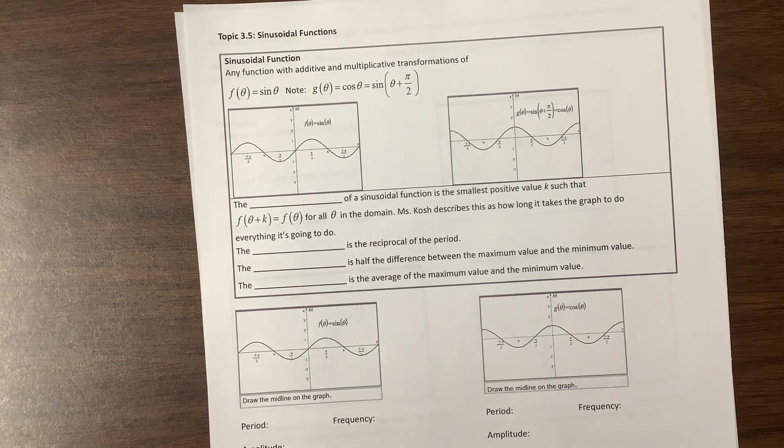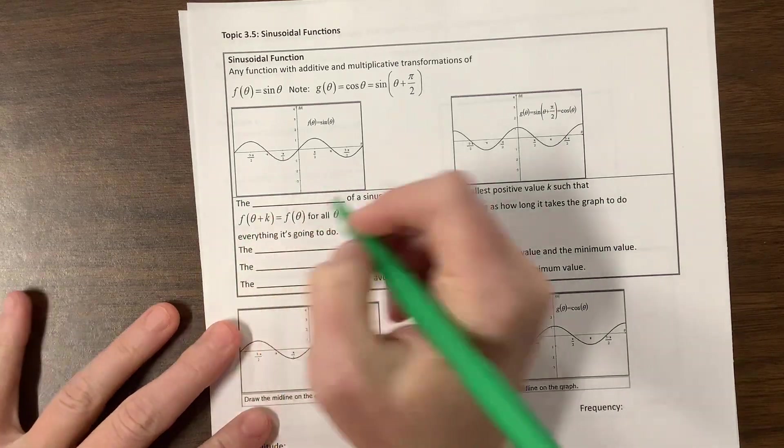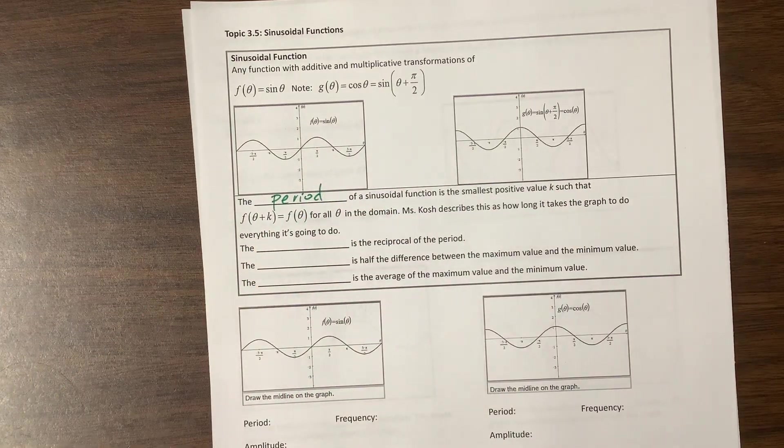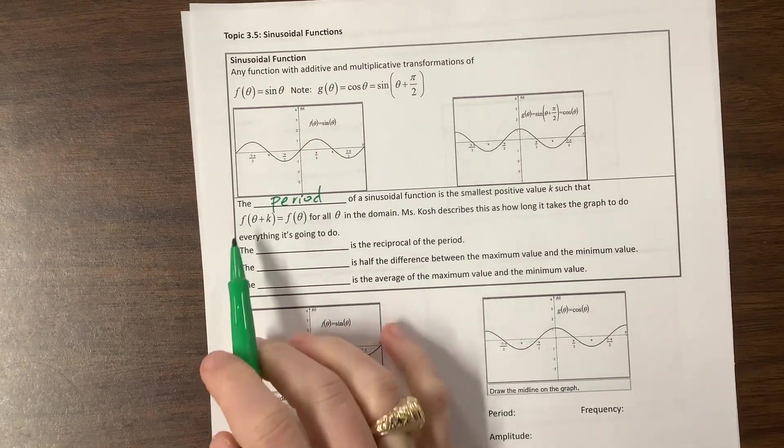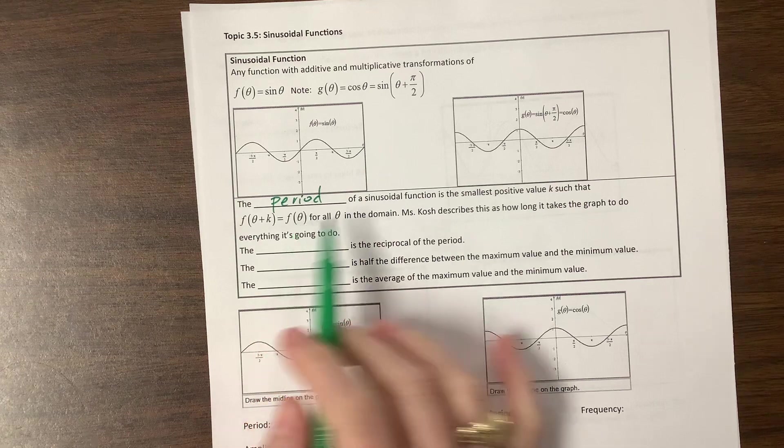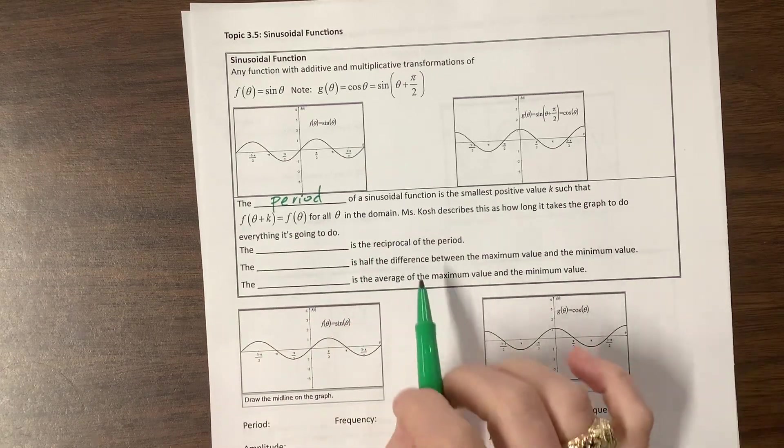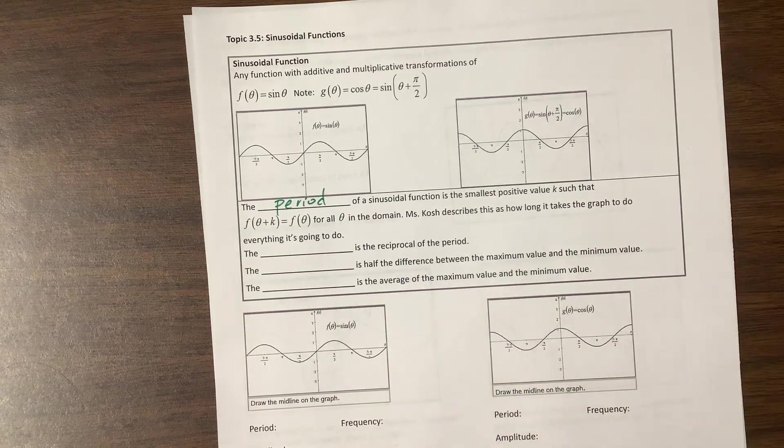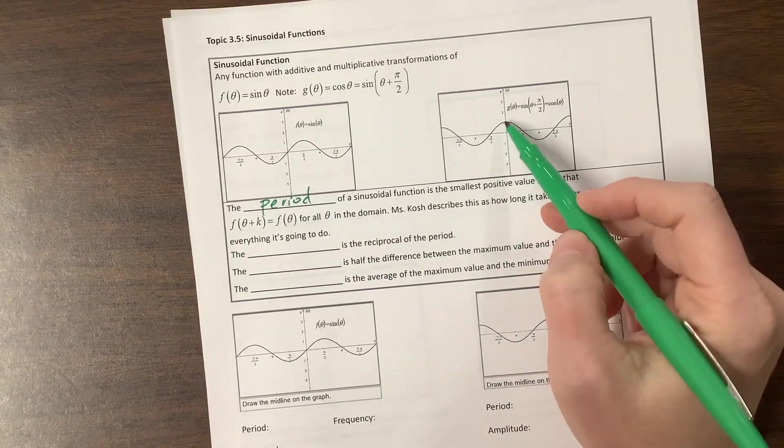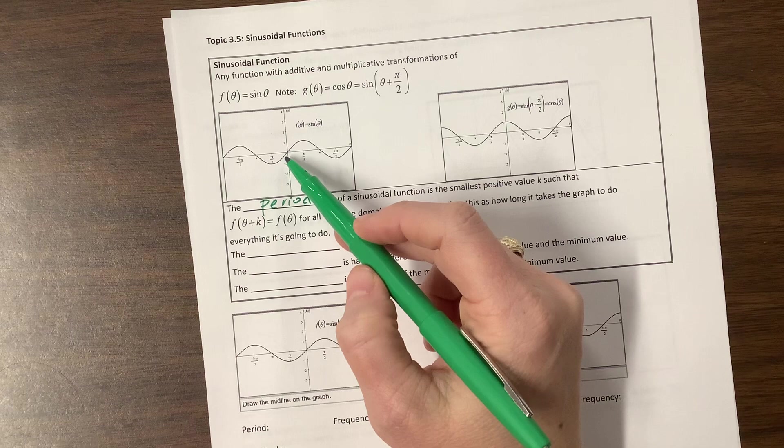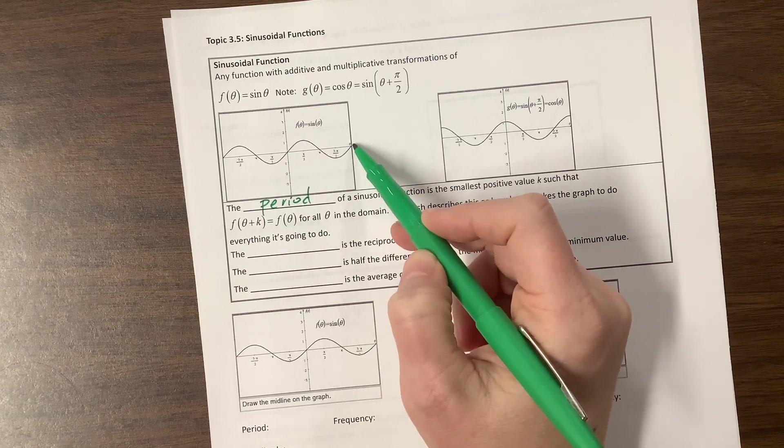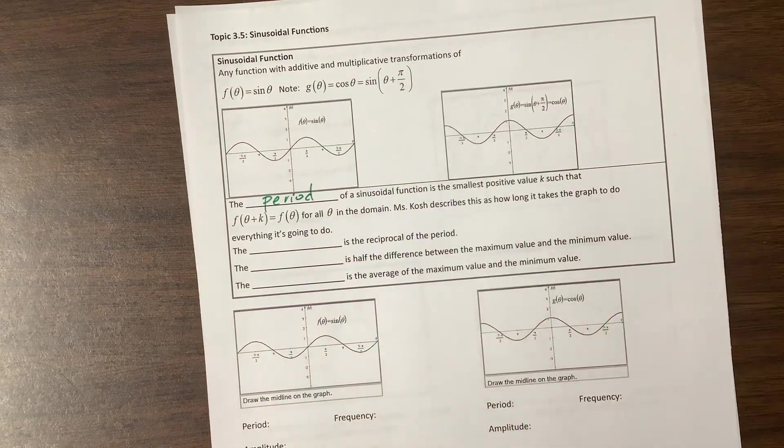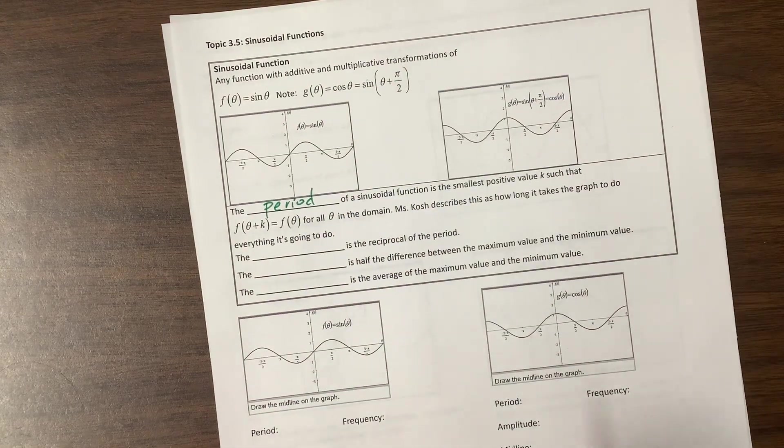The period of a sinusoidal function is the smallest positive value k such that f of theta plus k equals f of theta for all theta in the domain. Ms. Kosh describes that as how long it takes the graph to do everything it's going to do. So I look at this graph—we start here, we go up, we go down, we come back to zero. How long did that take? That took us to two pi.